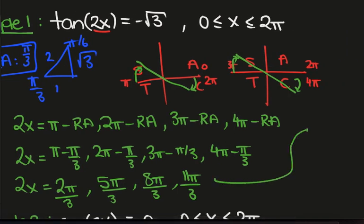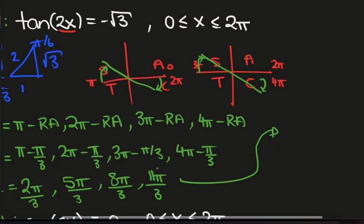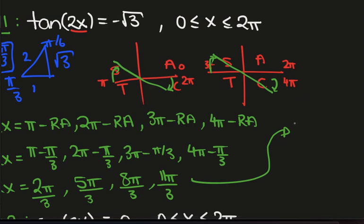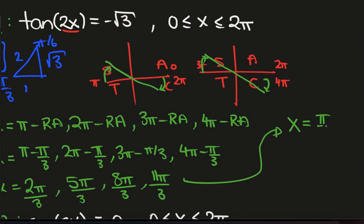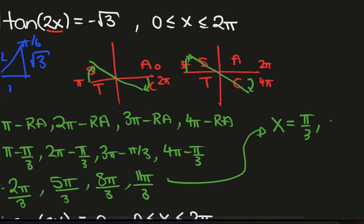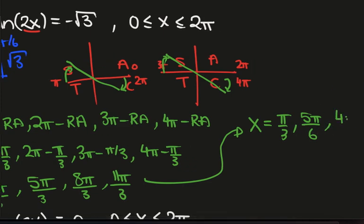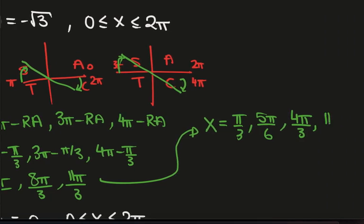But we don't want 2x, we want x. So then we just divide all of these solutions by 2 and so x is pi on 3, 5 pi on 6, 4 pi on 3 and finally 11 pi on 6.